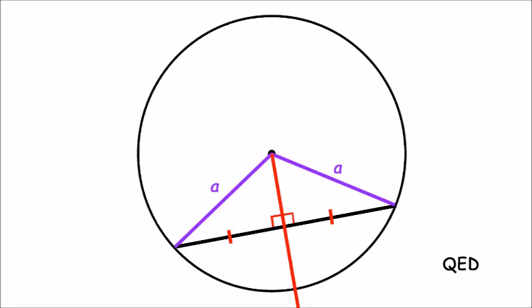This means that we have proven that the perpendicular bisector of any chord of a circle does pass through the centre of the circle.